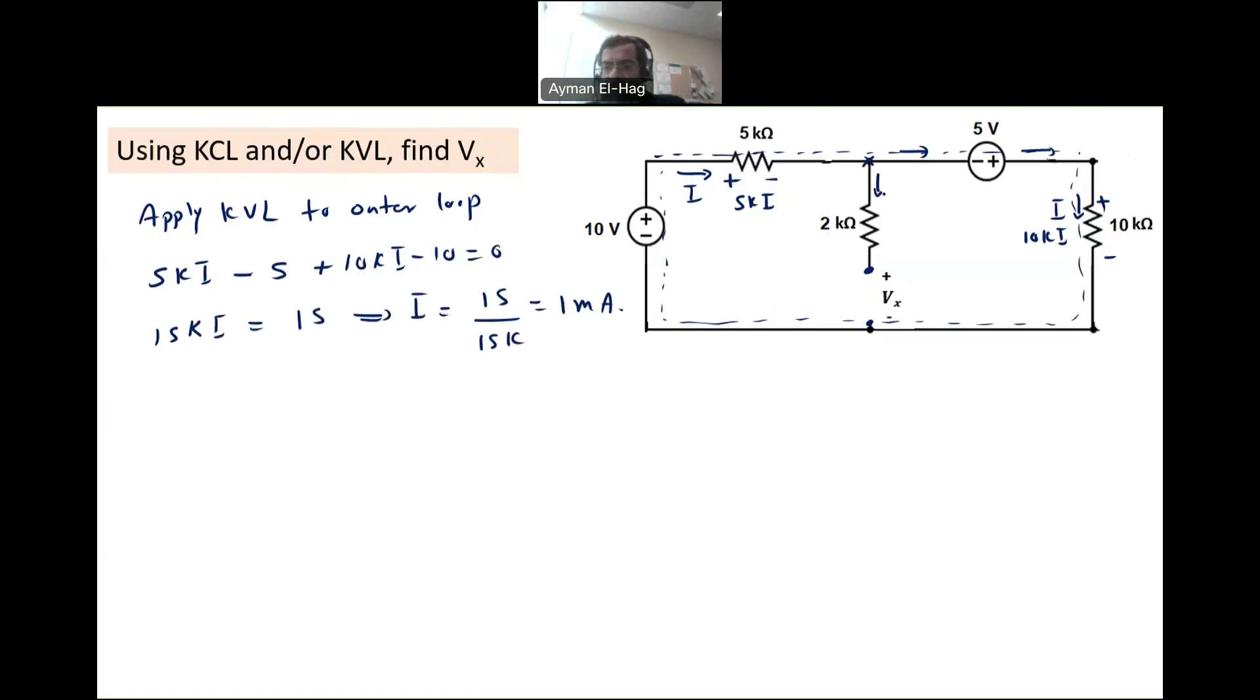Now, the current that goes here, we know now it's equal to zero. So the voltage across the two kilo ohm resistor, the voltage here is also equal to zero. So keep this in mind when we do the KVL.